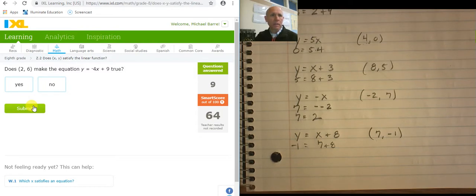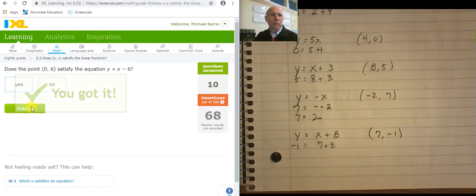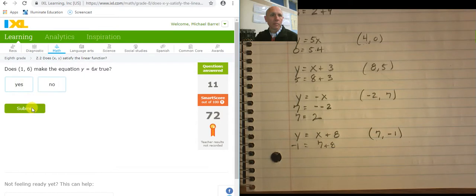Plugging in a 2. Negative 8 plus 9. Negative 8 plus 9 is 1. No. That didn't work. Plugging in a 0. 0 minus 6 equals 6. No. Plugging in a 1. 1 times 6 equals 6. Yes.